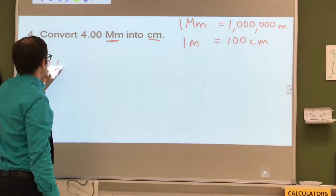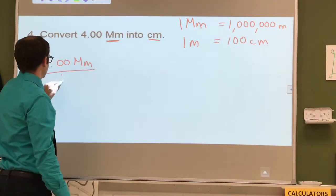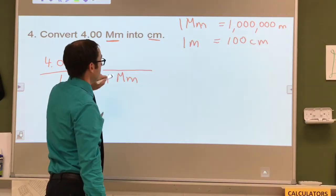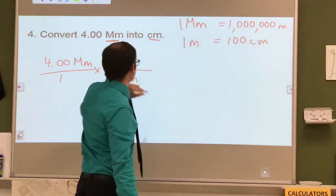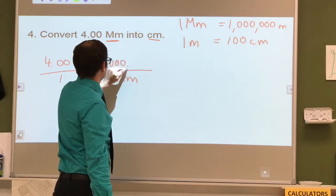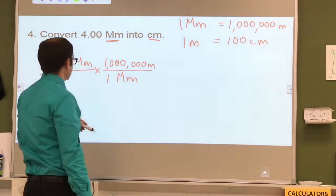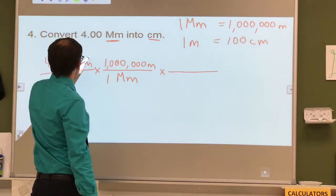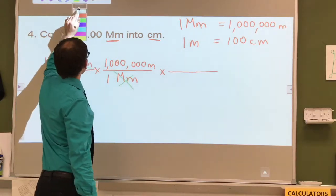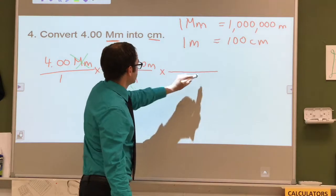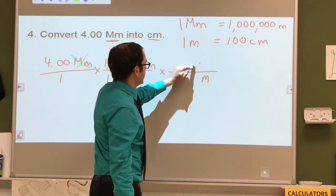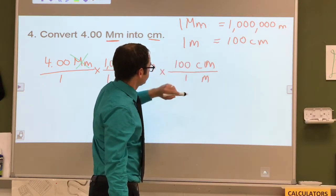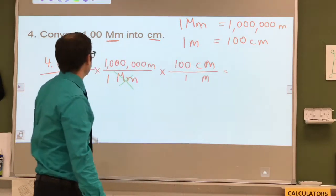Now, what you need to do is set up all the work. So, we're going to do 4.00 megameters. We're going to put 1 megameter down here. And the reason for that is we want to go to meters first. And we're going to cancel out the megameters because they're on the top and the bottom. So now we have meters. Meters are going to go down here. We can now go to centimeters, which is what we're looking for. And 1 meter equals 100 centimeters. And the meters will cancel out.